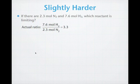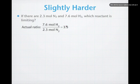Again, we're going to put the hydrogen up on top. It's just easier to have the reactant with the larger coefficient up on top. You could do it either way around. It should come out just fine. Now we have a ratio of 3.3 moles of hydrogen to every mole of nitrogen.